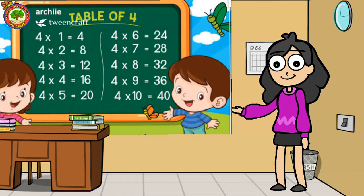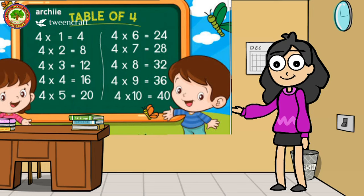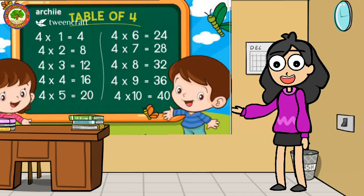One more time, but fast. 4 ones are 4, 4 twos are 8, 4 threes are 12, 4 fours are 16, 4 fives are 20, 4 sixes are 24, 4 sevens are 28, 4 eights are 32, 4 nines are 36, 4 tens are 40.